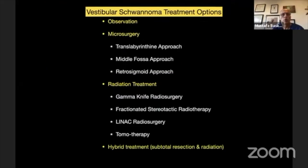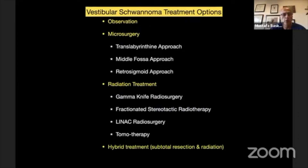What are the treatment options for acoustic neuromas or vestibular schwannomas? Observation is always a reasonable option. Microsurgery, and this can be done via three approaches: retrosigmoid, middle fossa, and TransLab.